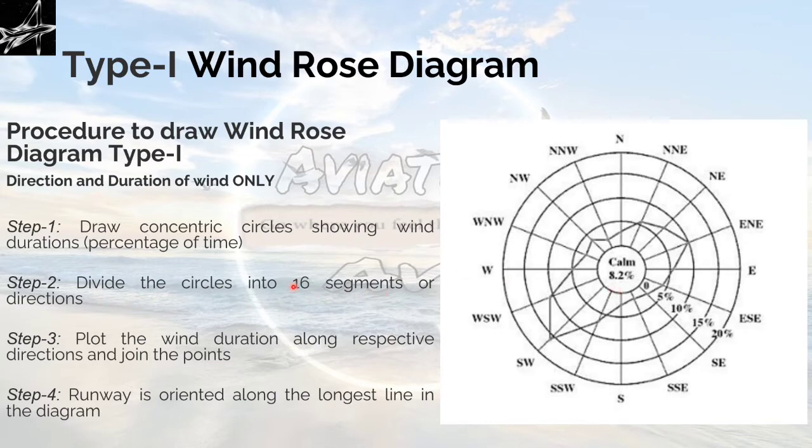Step 2: Divide the circles into 16 segments or directions. Divide it into north, north-north-east, north-east and so on. This will take 16 parts radially. Step 3: plot the wind duration along the respective directions and join the points. You have to plot the wind duration. Assume that in east-north-east you have 10% of the time duration, then here you have this, then this, in south-west you have this, south-south-west you have this point, and then join all the points. It will form a contour type shape.